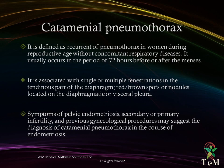Catamenial pneumothorax is defined as recurrent pneumothorax in women during reproductive age without concomitant respiratory disease. It usually occurs within 72 hours before or after menses, and is associated with single or multiple fenestrations in the tendinous part of the diaphragm, and red or brown spots located on the diaphragmatic or visceral pleura. Symptoms of pelvic endometriosis, secondary or primary infertility, and previous gynecological procedures may suggest the diagnosis of catamenial pneumothorax in the course of endometriosis.